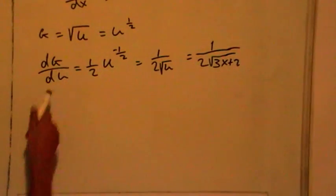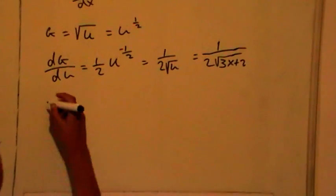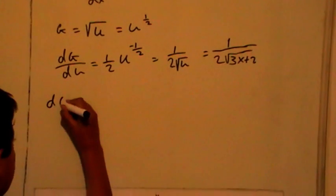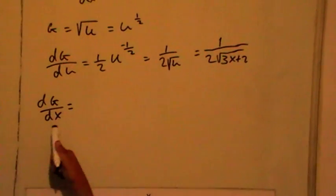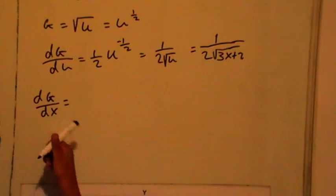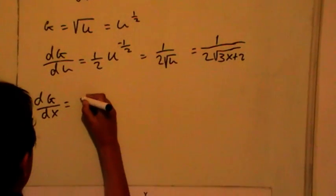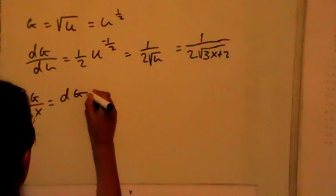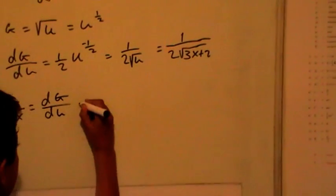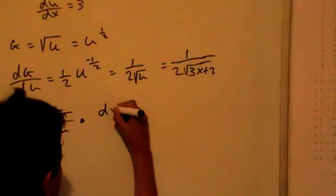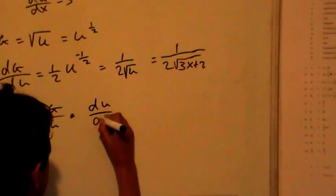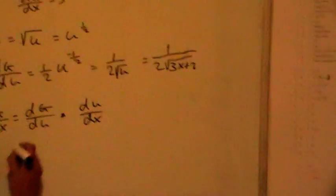Now, we need to find dg over dx. dg over dx, which is g dash, equals dg over du times du over dx.